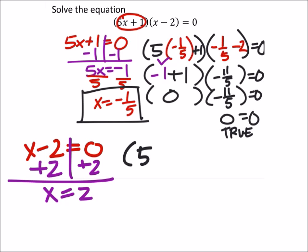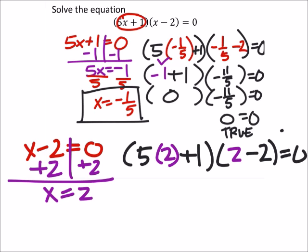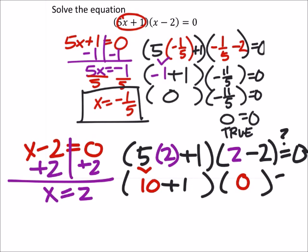So, I've got 5 times 2 plus 1. And then I've got 2 minus 2. And this should equal zero. We'll put a question mark just to see that we're checking our work. 5 times 2 is 10. And then we've got the plus 1. And 2 minus 2 is zero. Does this equal zero? And this would give us 11 times zero. Does it equal zero?